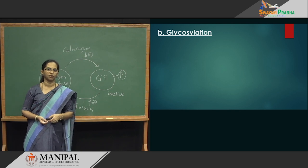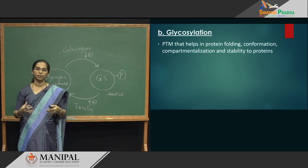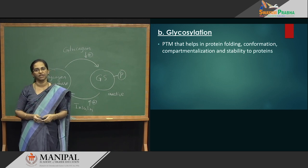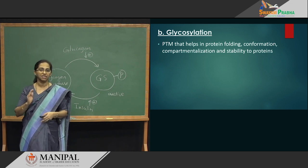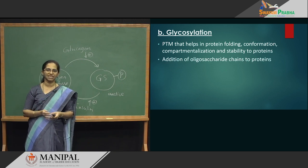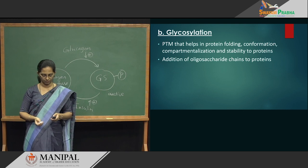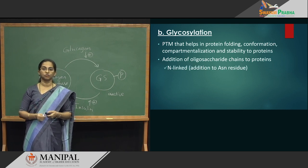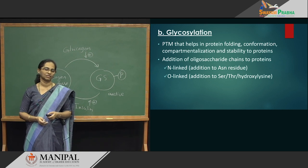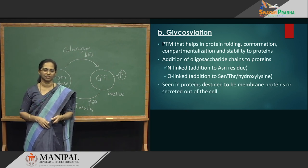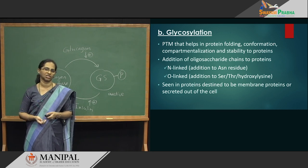Let us move on to the next example of covalent modification — glycosylation. As the name tells you, you are going to add a sugar group. It will help in folding the protein, packaging it and sending it out of the cell. Any protein destined to go out or to some other location — the best PTM we do is glycosylation. You add one sugar molecule or multiple oligosaccharide chains to the protein and then send it out. You can link it to asparagine — we call it N-linked — or you can link it to serine or threonine — then you call it O-linked. Glycosylation is for proteins destined to go out of the cell.